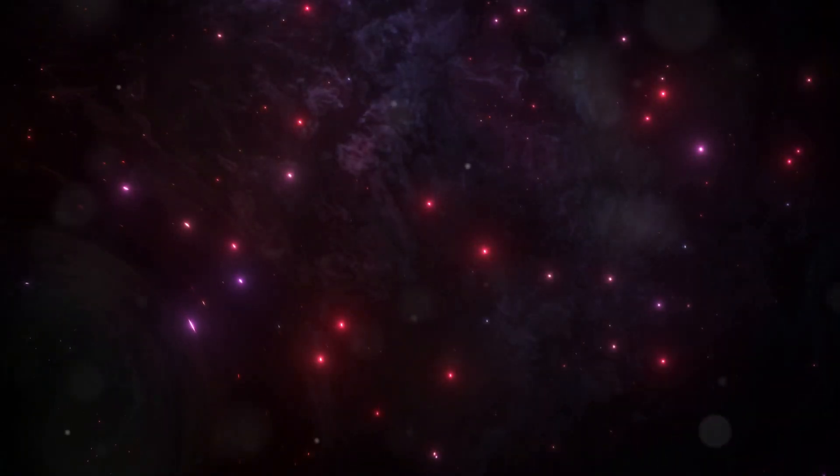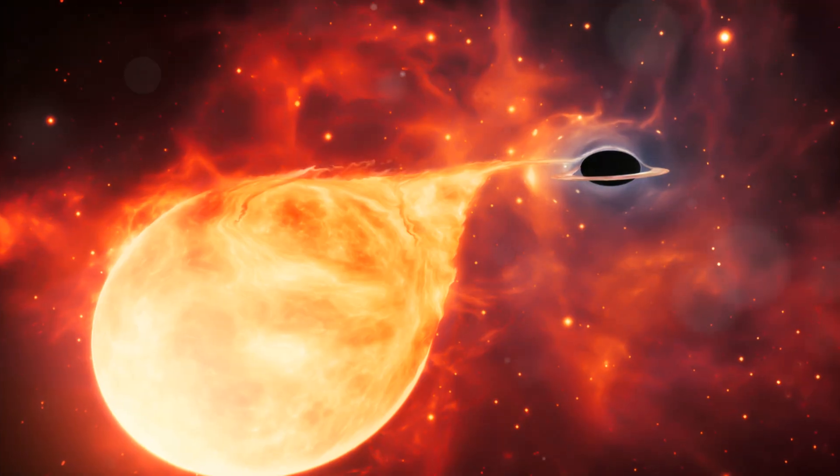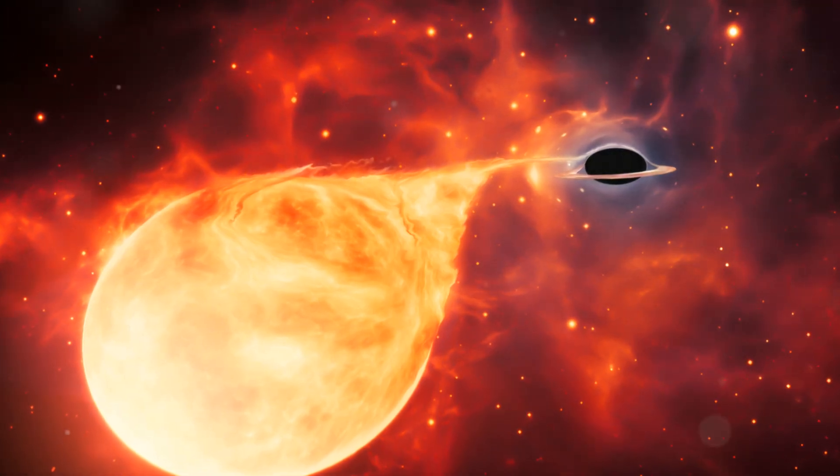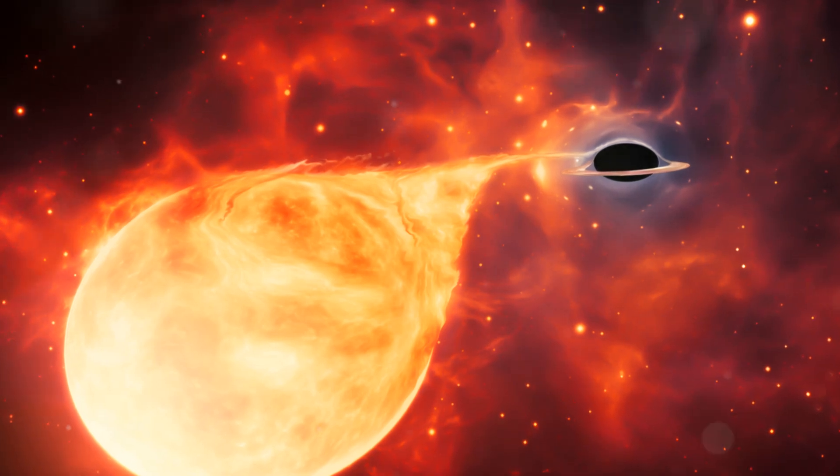Imagine the event horizon of a black hole as a tapestry woven from entangled threads, each thread representing a connection between particles inside and outside the black hole. As objects fall into the black hole, their information becomes entangled with the information of particles already present on the event horizon. This entanglement, they argue, prevents information from being truly lost, even as objects disappear beyond the point of no return.